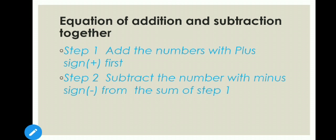Steps for solving three-digit numbers will be the same as for one-digit and two-digit. First of all, you have to add the numbers having a plus sign in between them. In the second step, subtract the number having a minus sign from the sum of step one.